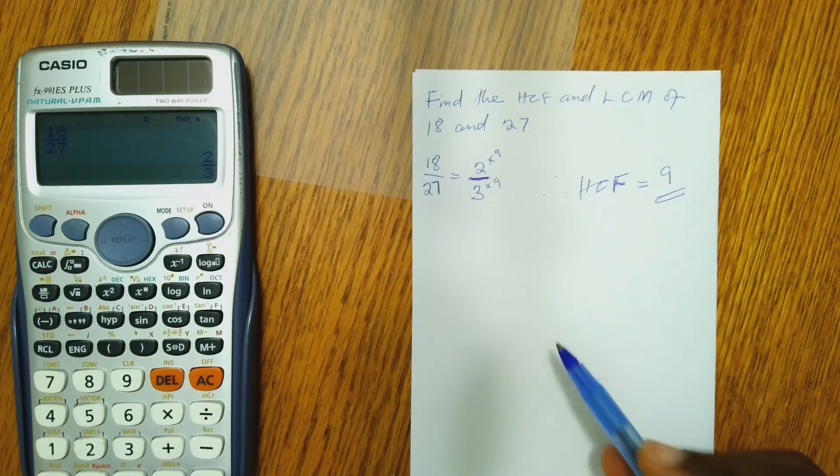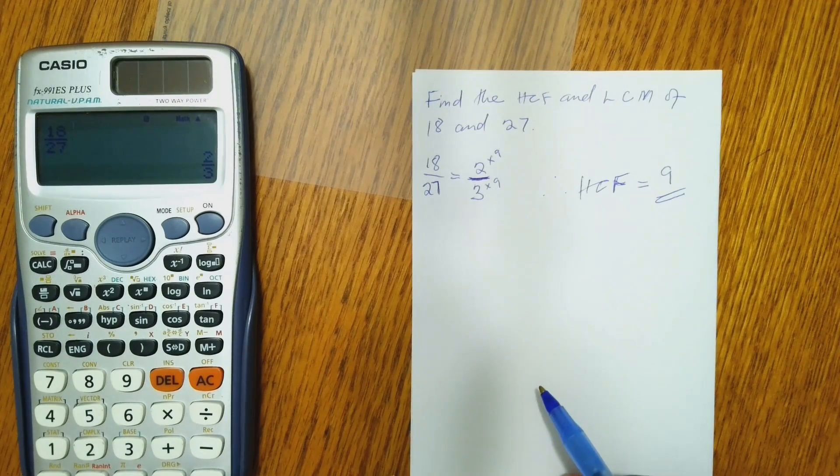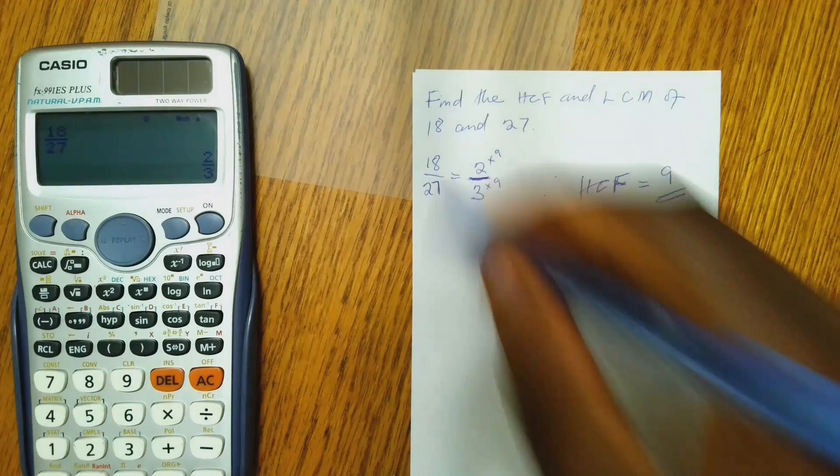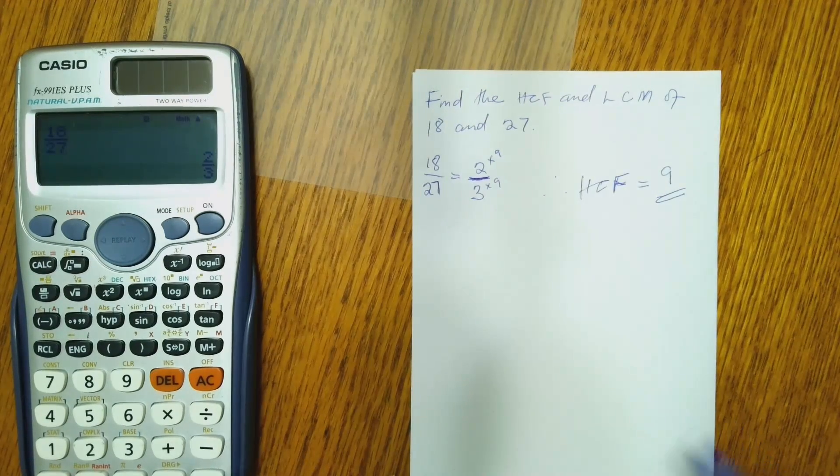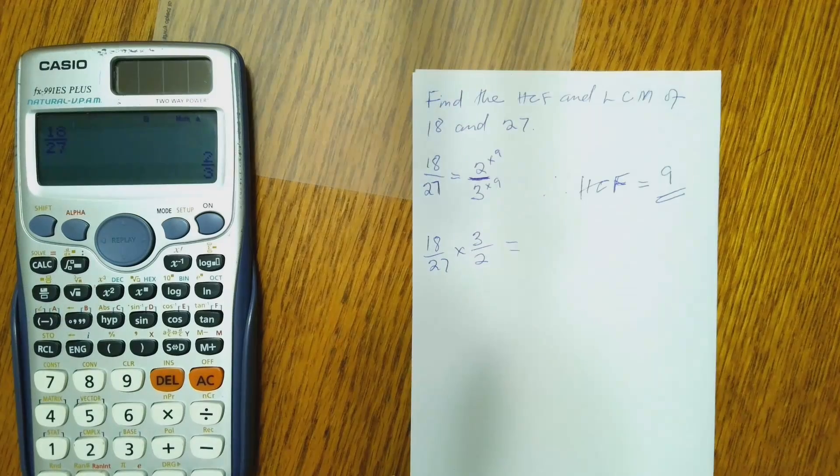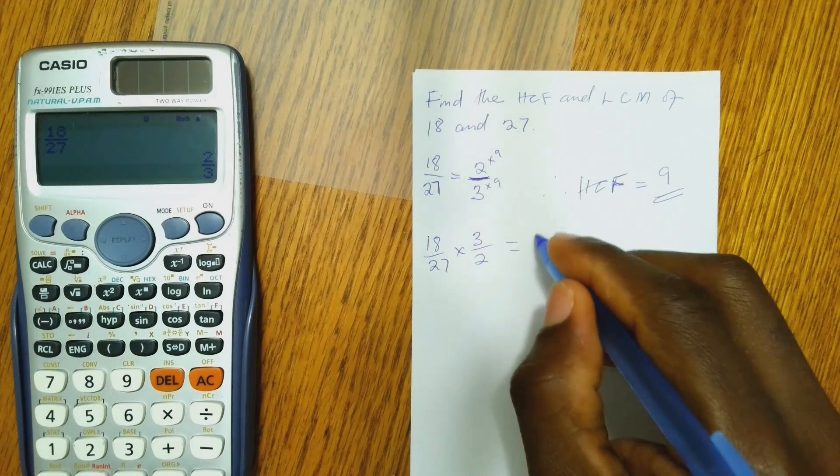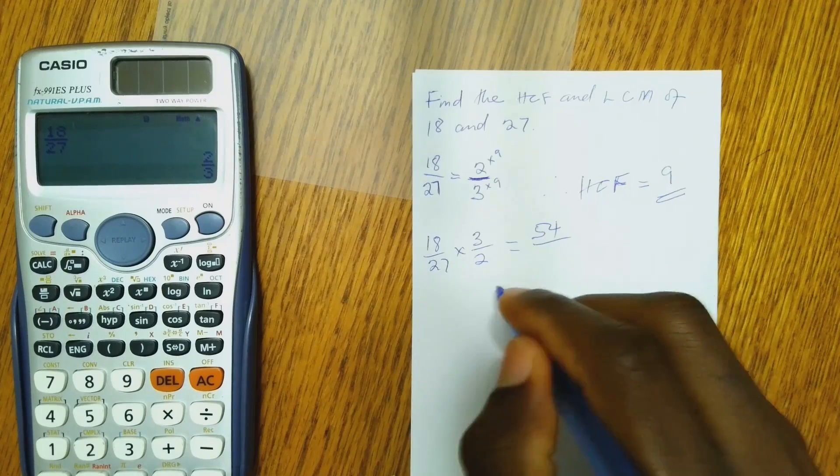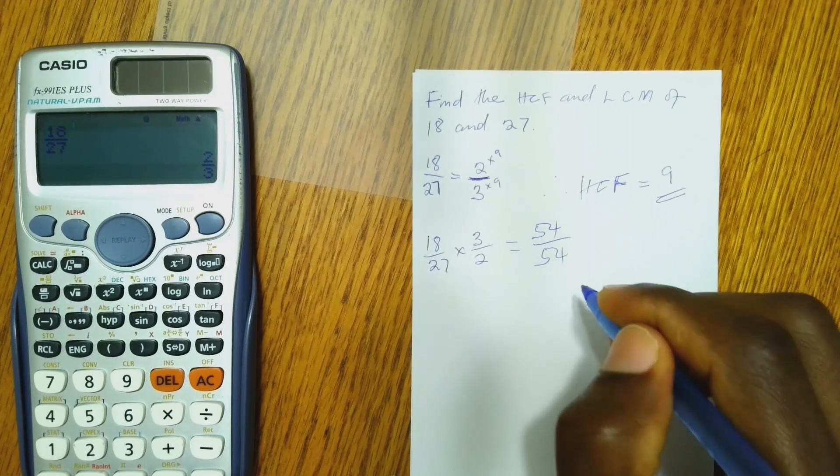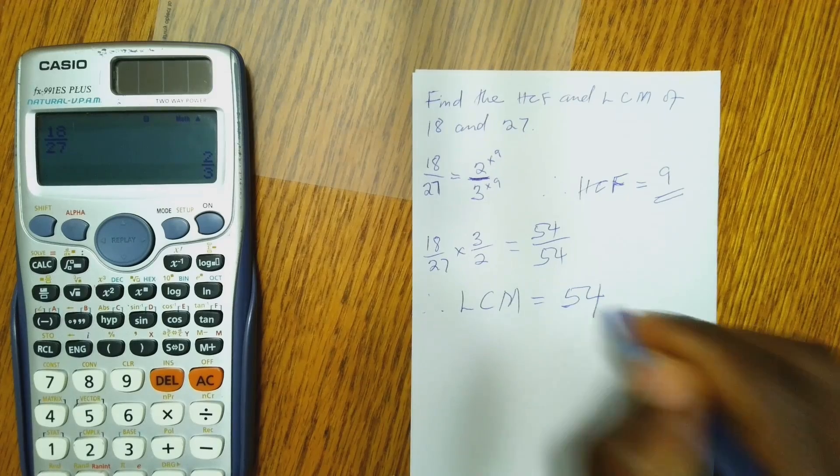Then to find the LCM, we flip the 2 over 3 to be 3 over 2. And we use that to multiply the question. And that gives us the LCM. So that becomes 18 over 27 times 3 over 2. And 18 times 3 is 54. And then 27 times 2 is also 54. Therefore the LCM equals 54.